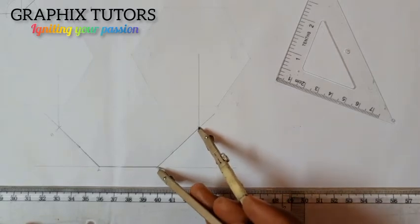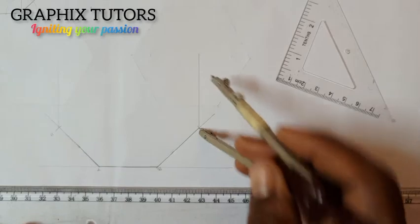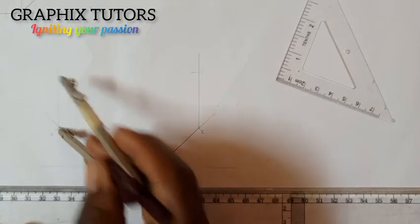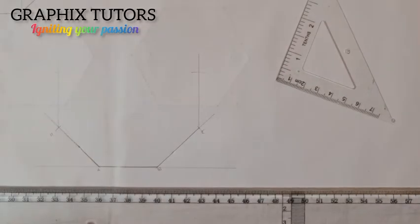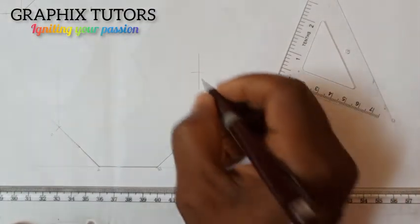I'll place it here and strike an arc. I'll do the same thing here also and strike another arc. So this will be my point D, this will be H, and this will be my point G.